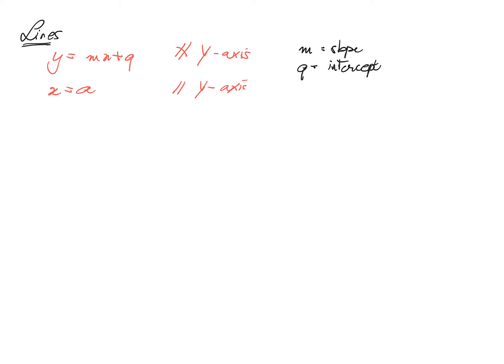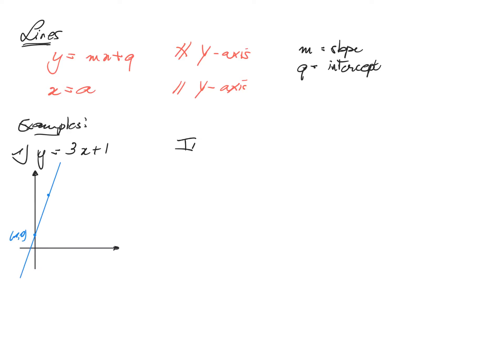To see the interpretation of slope and intercept, let us look at the following example. Suppose we have a line y equal to 3x plus 1. Drawing this line gives us the following graph. The interpretation of the intercept is quite straightforward: it is the value you obtain for y if x is equal to 0, so it is the y-coordinate of the intersection of the line with the y-axis.